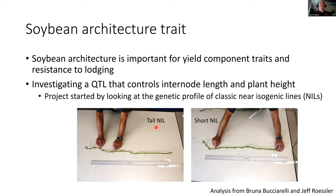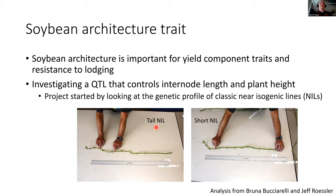Architecture traits have many components — not just lodging, but yield component traits, branching, and so forth. We narrowed in on one project that came to my attention a few years back when Ben Campbell, working with Aaron Gilbert in Aaron Lorenz's group, identified a mappable QTL for a classical near-isogenic line. They had a pretty good idea of where it was located in the genome based on genomic analysis, so we decided to pursue this lead — a QTL that controls internode length and plant height.